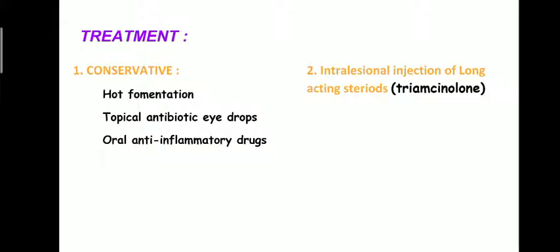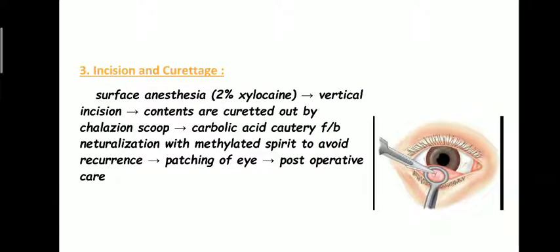Treatment: conservative treatment like hot fomentation, topical antibiotic eye drops, and oral anti-inflammatory drugs can be helpful. Intralesional injection of long-acting steroids like triamcinolone is also a treatment modality. Third is incision and curettage: surface anesthesia with 2% xylocaine is given, then a vertical incision is made — for the same reason as internal hordiolum — to avoid damage to the meibomian gland ducts which run vertically.